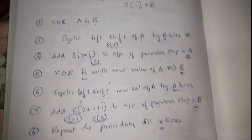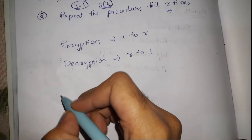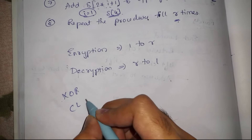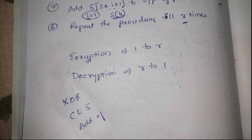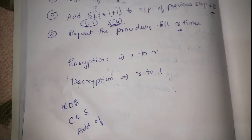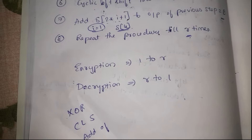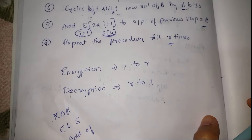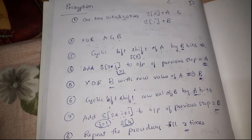To summarize, there are only three operations performed in each round of the RC5 algorithm: XOR operation, cyclic left shift, and addition of sub-keys to a and b to pass new values to the next round. That's it for this video. Thank you so much for watching. Make sure to hit like, subscribe, and the bell icon for future notifications. See you in the next one.